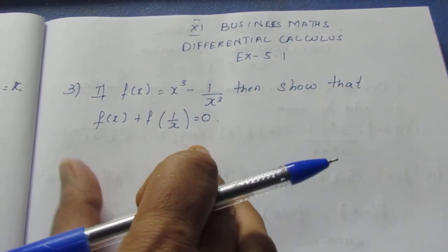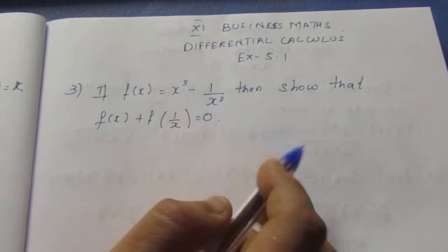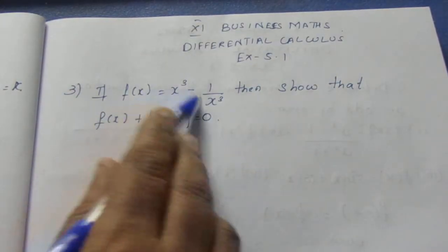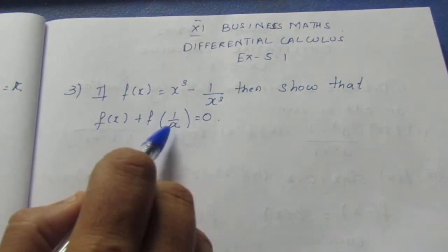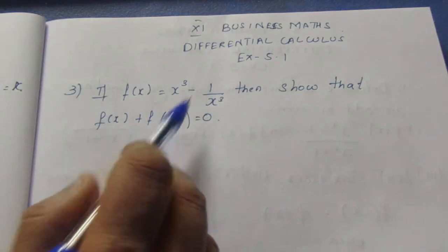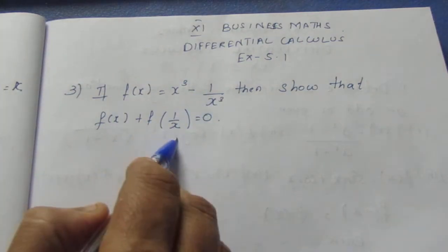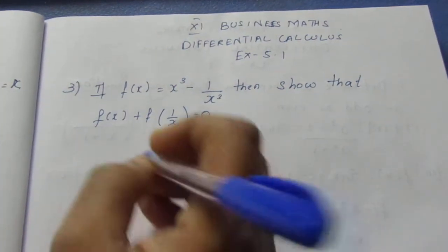We are given that f of x is equal to x cube minus 1 by x cube. There is no problem for this value. For this, we have to find f of 1 by x. So, if you have 1 by x, you can substitute it into the function.